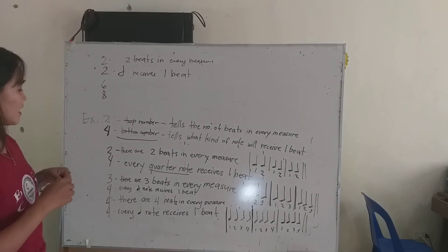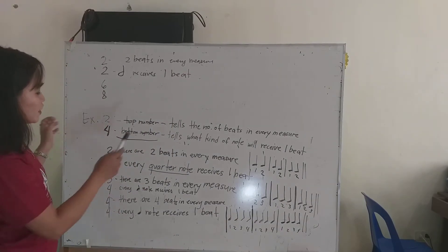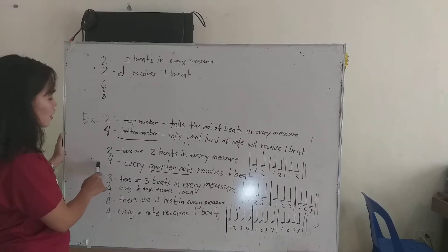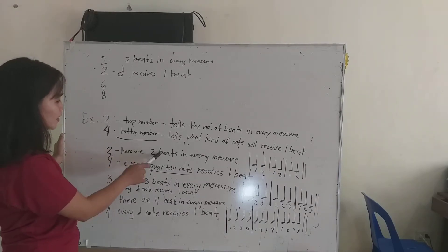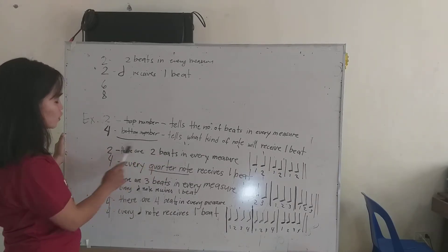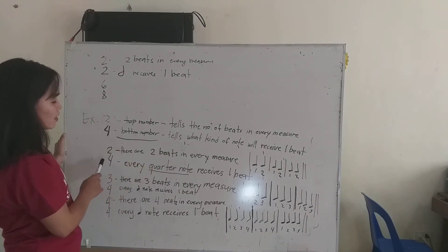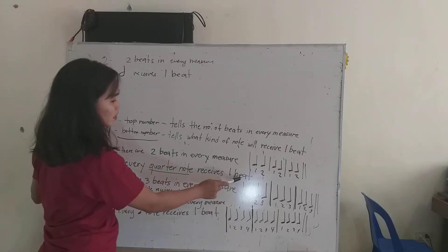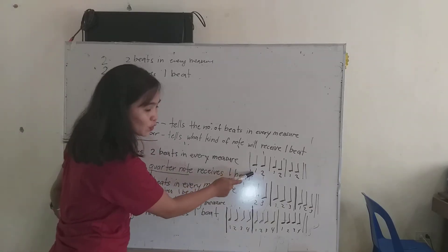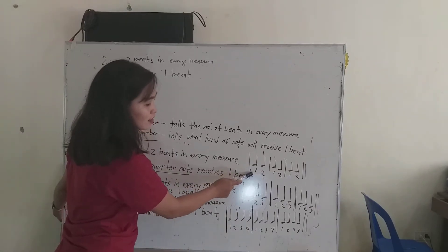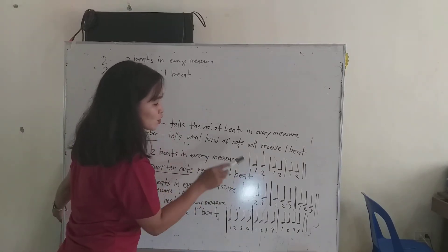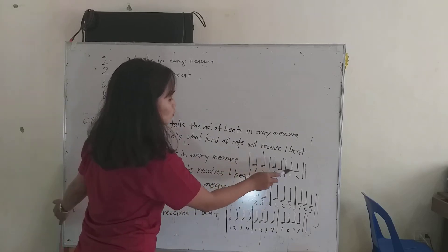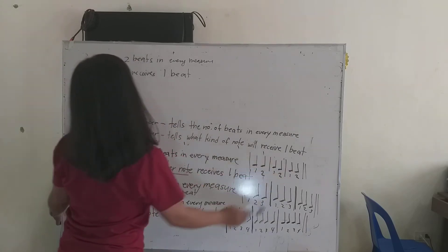Titignan natin. I-review ulit natin, sa 2/4, there are 2 beats in every measure, and every quarter note receives one beat. So ang quarter note ay one beat. So 1-2, 1-2, 1-2.